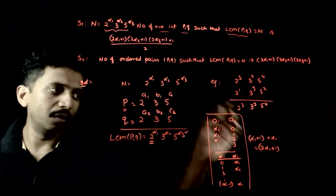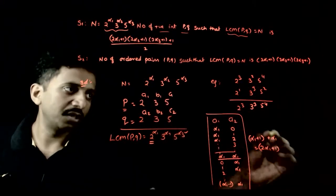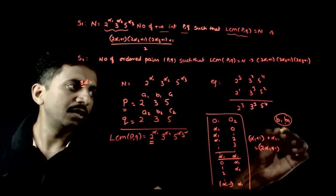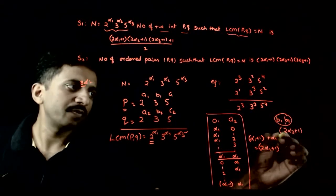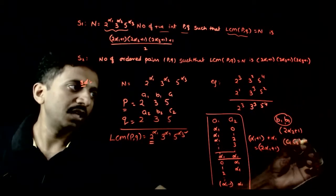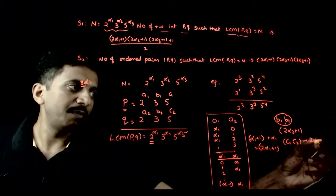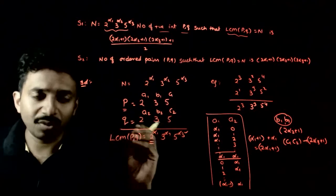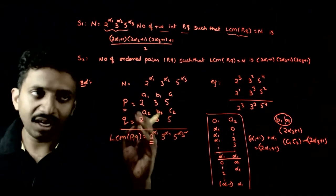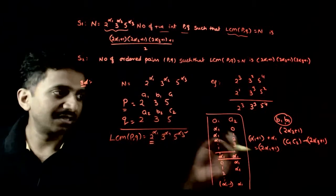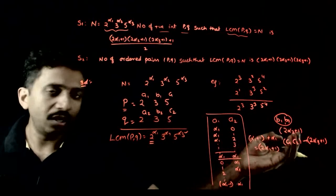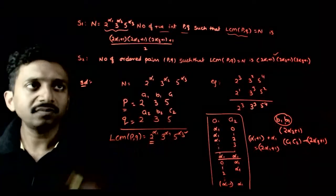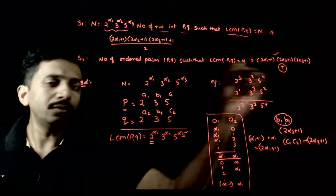Similarly, applying the same logic, I can select (b1, b2) in 2α2+1 ways, and (c1, c2) in 2α3+1 ways. So the total number of ways to select all of (a1,a2), (b1,b2), (c1,c2) is (2α1+1)(2α2+1)(2α3+1). Statement 2 is true.